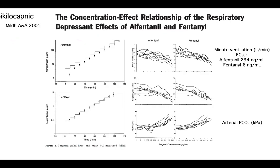Is that important? Just give the opioid. Like this study from 2001 — she wants you to use a plasma concentration, for instance a fentanyl concentration of 6 nanograms per ml. She took O2 into account.